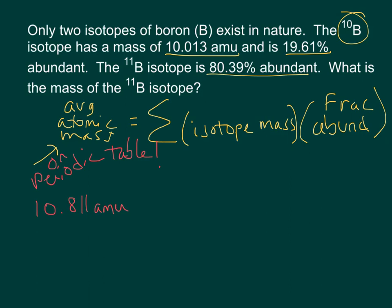So now let's go ahead and just fill in everything into our equation. For the first term, let's take care of B-10. We are going to have the B-10 isotope amu mass and the fractional abundance. So we're going to divide that 19.61% by 100, and we're going to get 0.1961. And then we're going to add that to our next term, which is the B-11 isotope, and this abundance for that divided by 100, which is 0.8039.